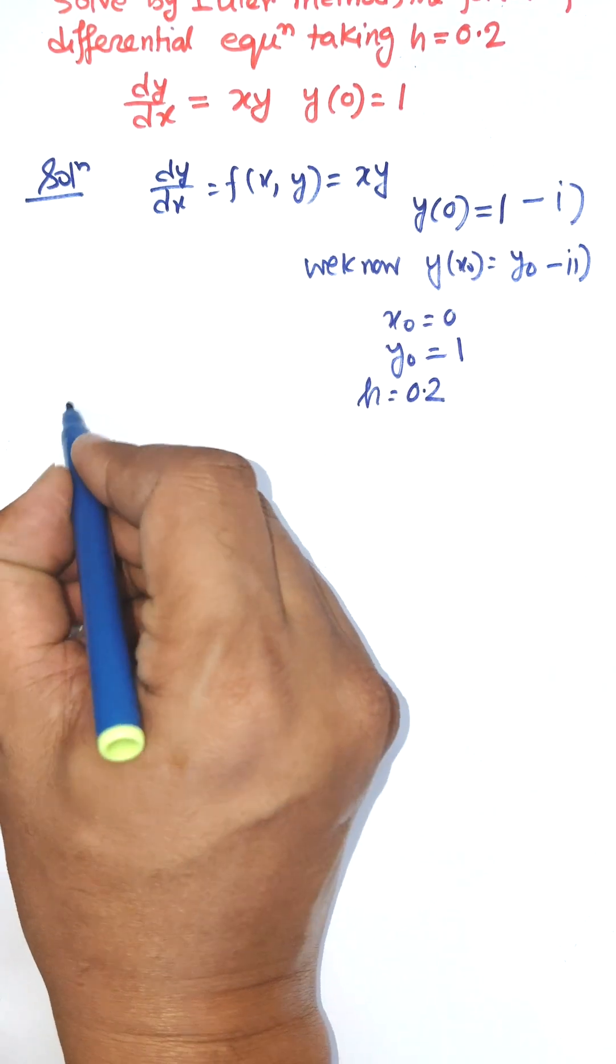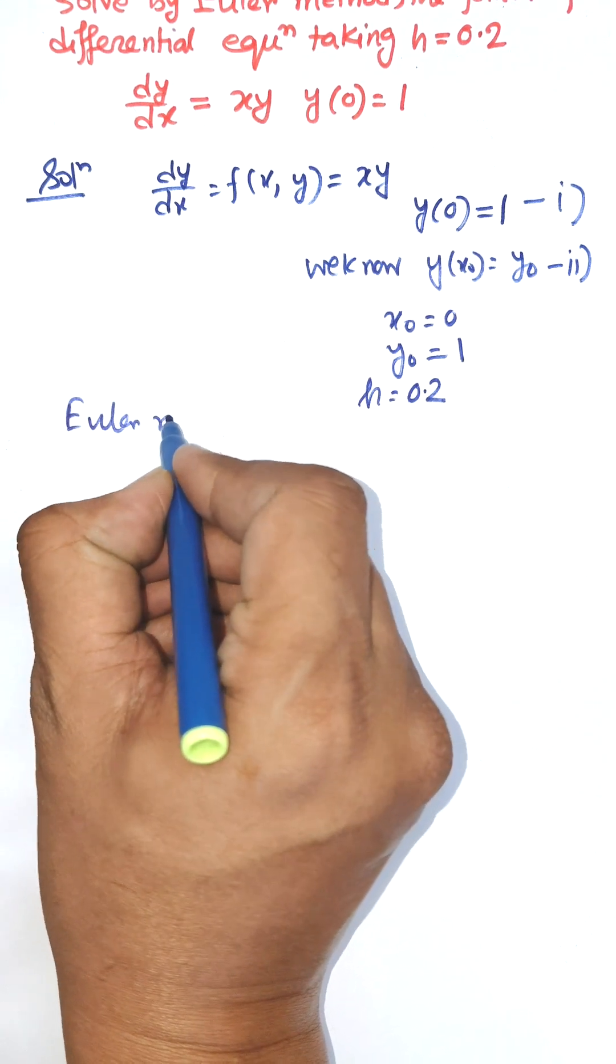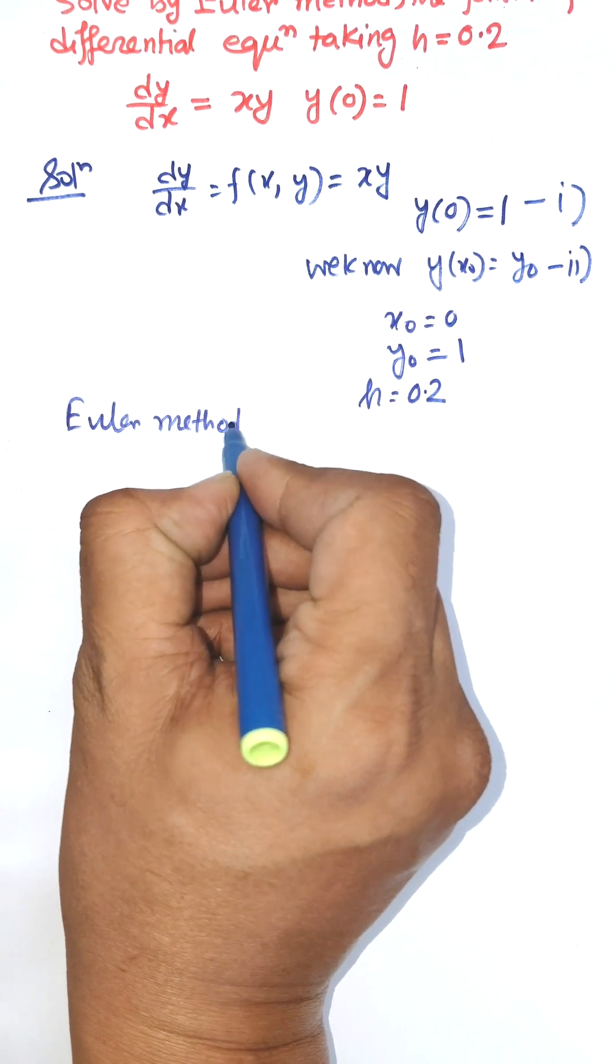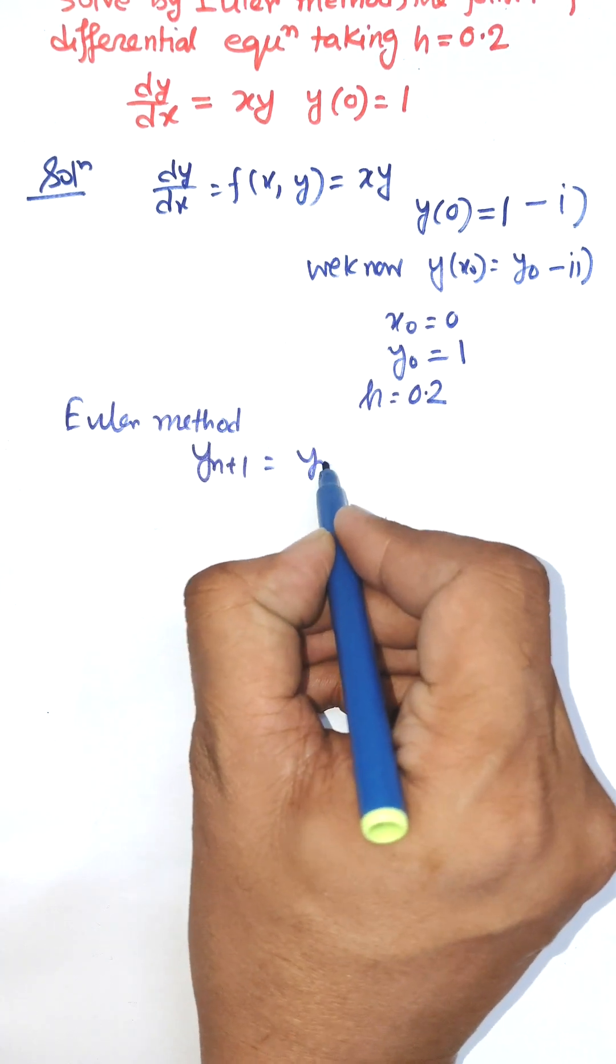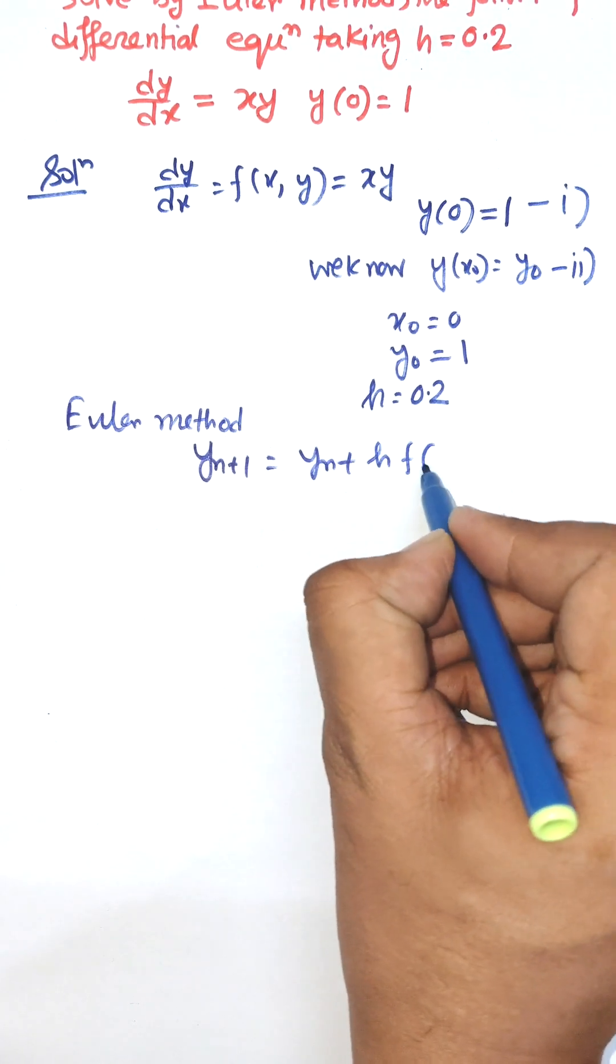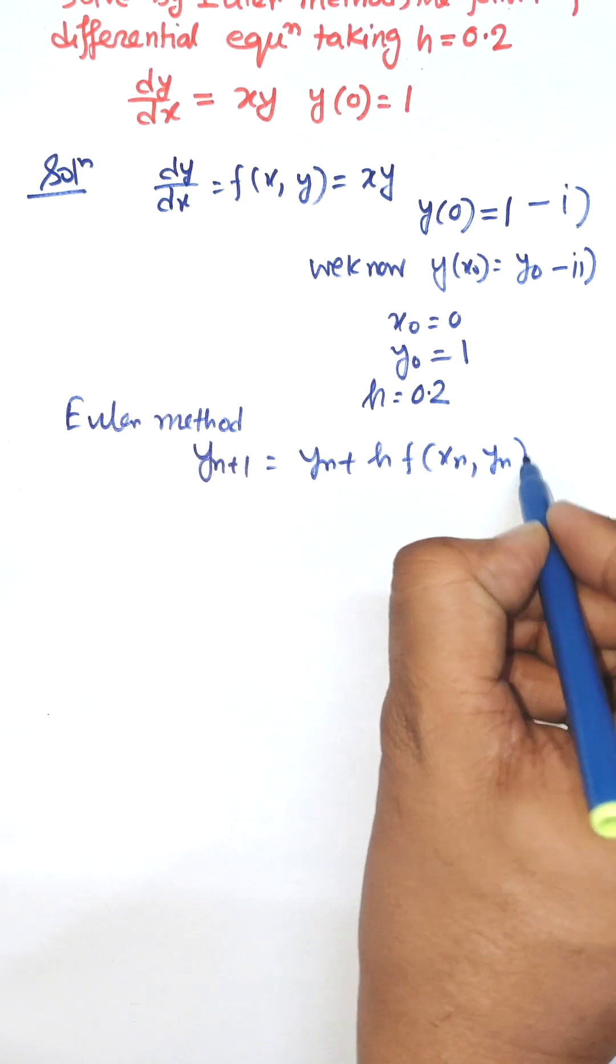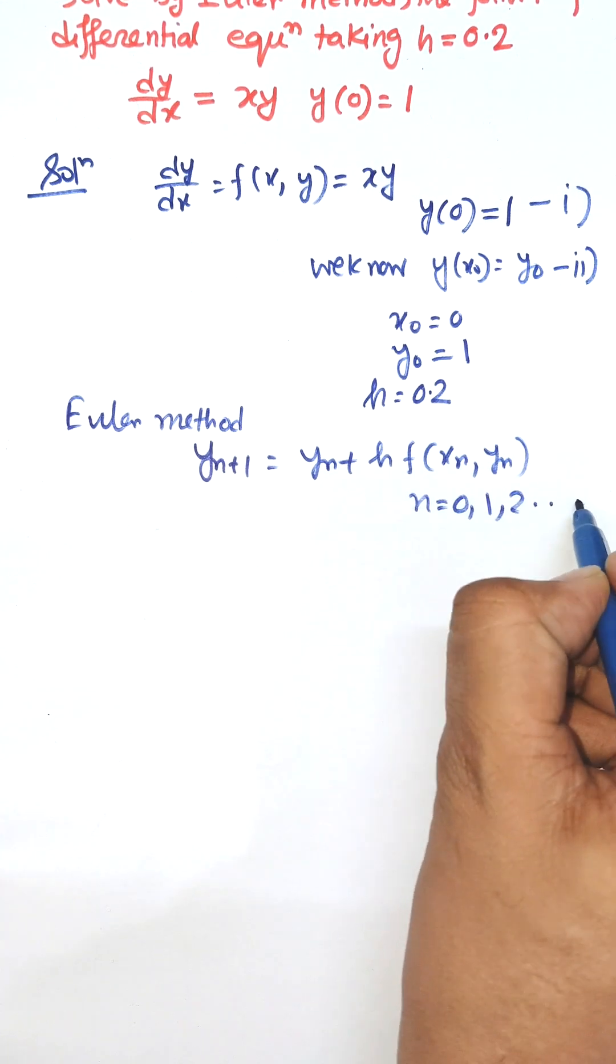Now, according to Euler method for solving differential equation, y(n+1) = yn + h·f(xn,yn), where n = 0, 1, 2, dot dot dot.